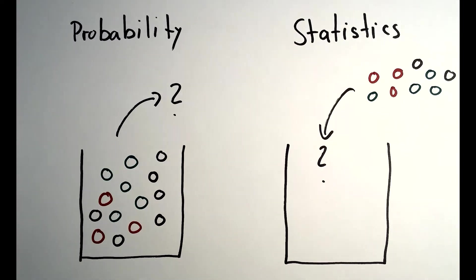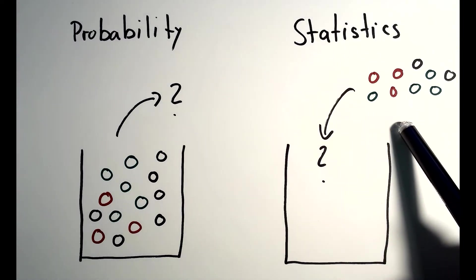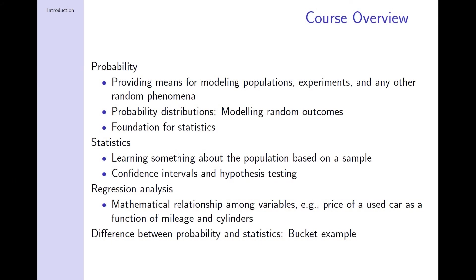Statistics is different. Again, you have a bucket, but you do not know what is in the bucket. Think about the content of the bucket as your population with unknown characteristics. To learn about the characteristics of the population, you will pull out a sample from the bucket. Based on the distribution of colored balls in your hand, you can use statistics to say something about the characteristics of your population — that is, the content of the bucket.